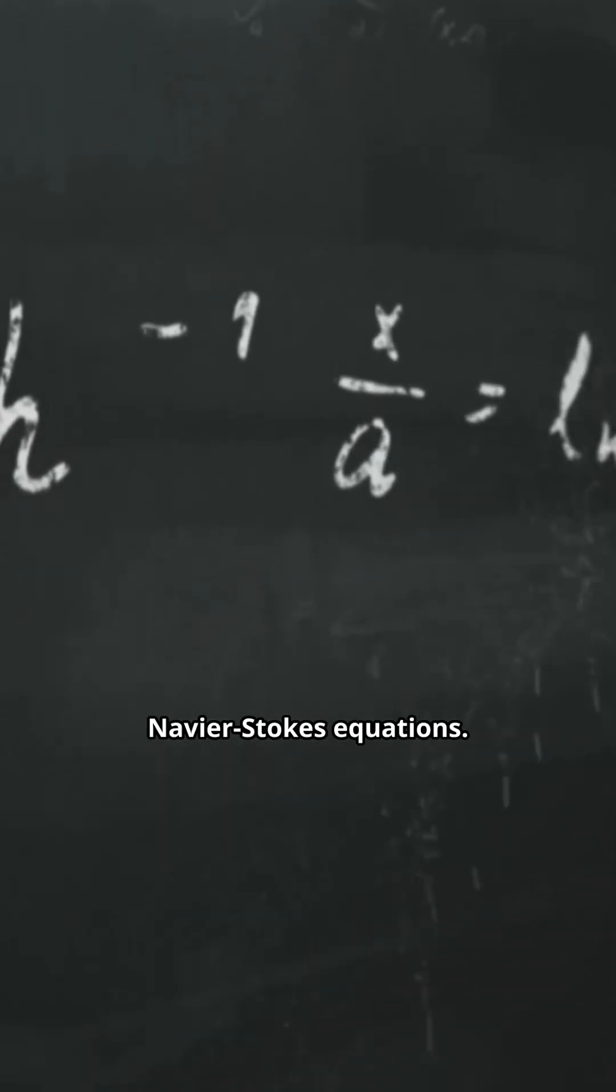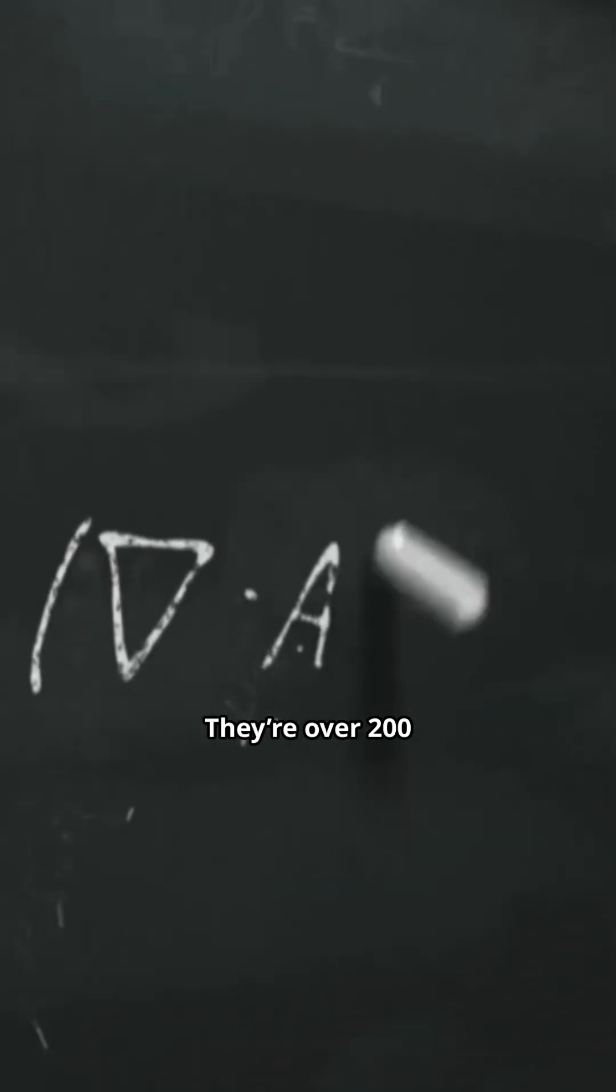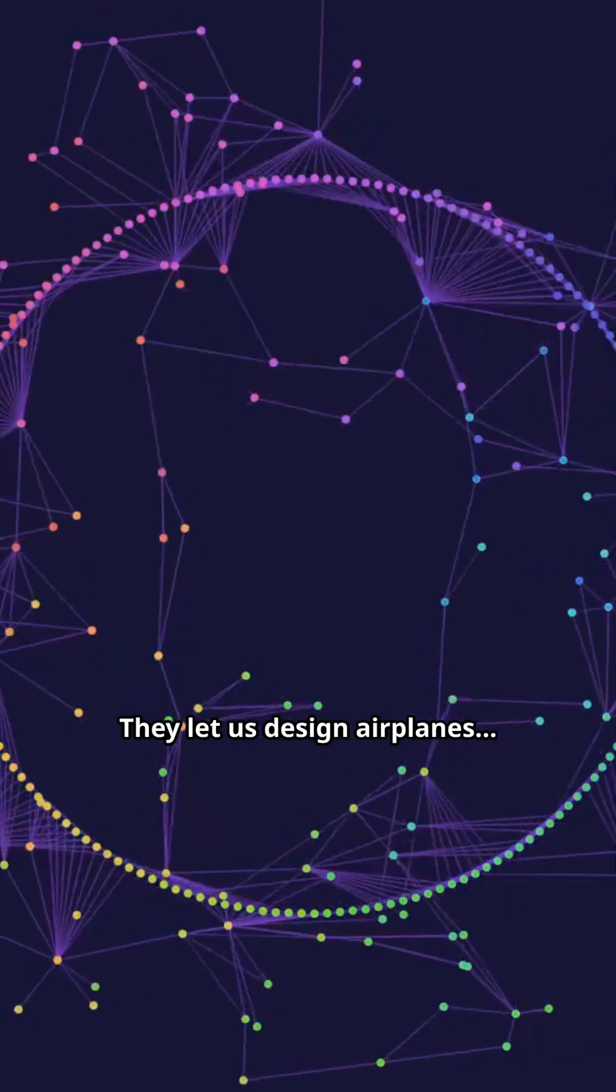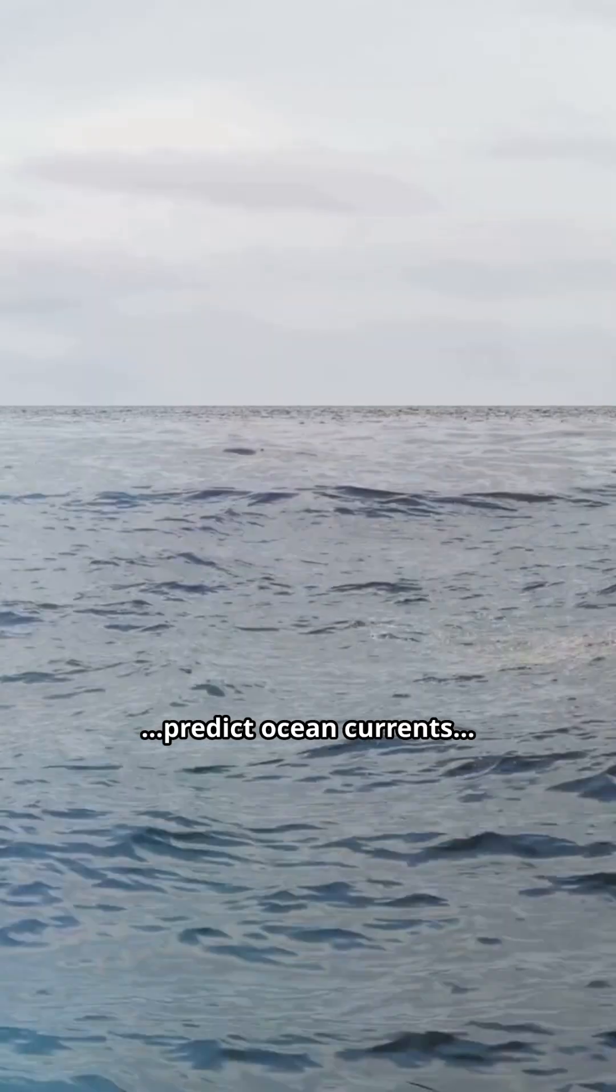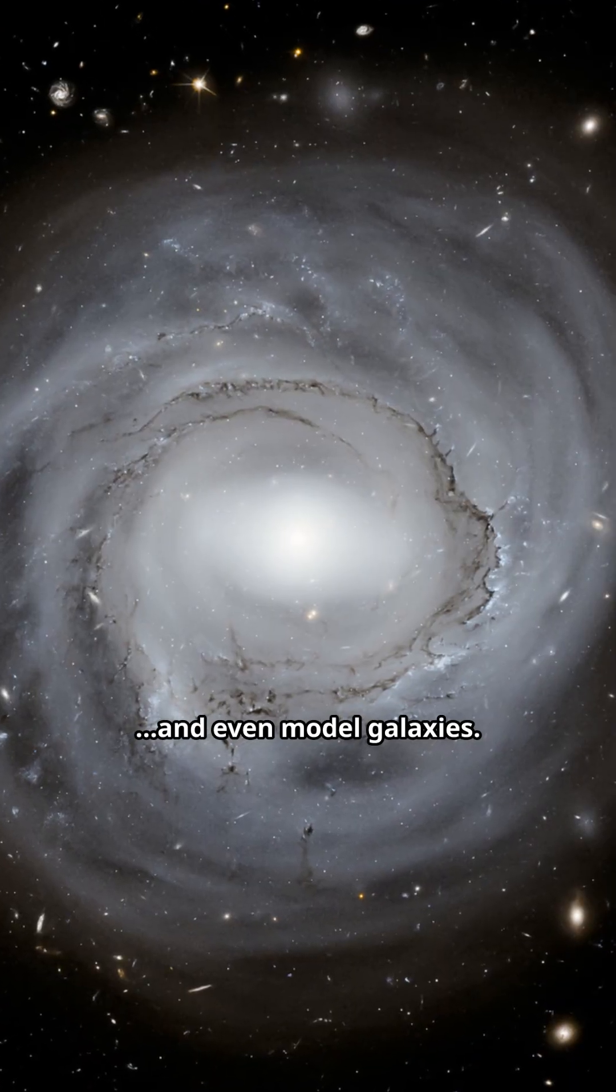These are the Navier-Stokes equations. They're over 200 years old and they describe almost all fluid flow. They let us design airplanes, predict ocean currents, and even model galaxies.